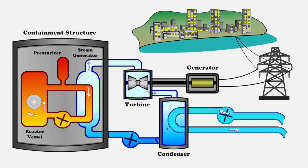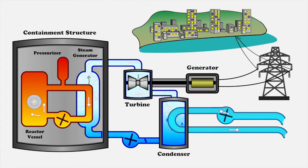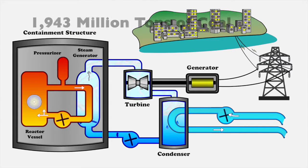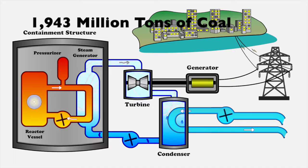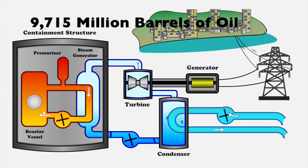For the entire year of 2010, the US produced about 3,886 million megawatt hours of electricity. This would require burning 1,943 million tons of coal or 9,715 million barrels of oil.